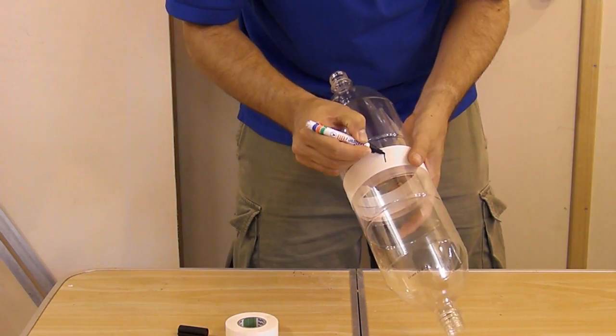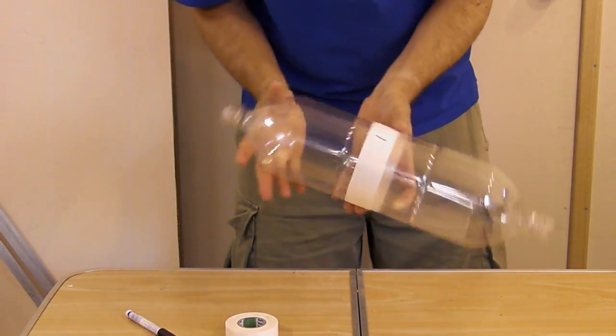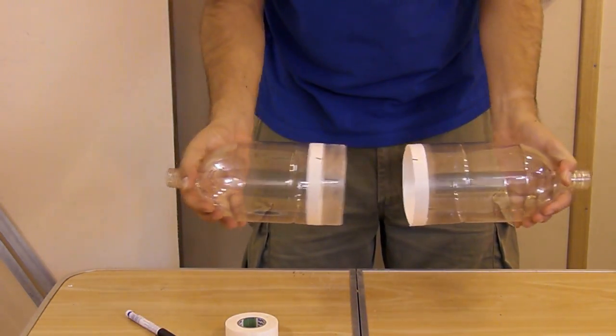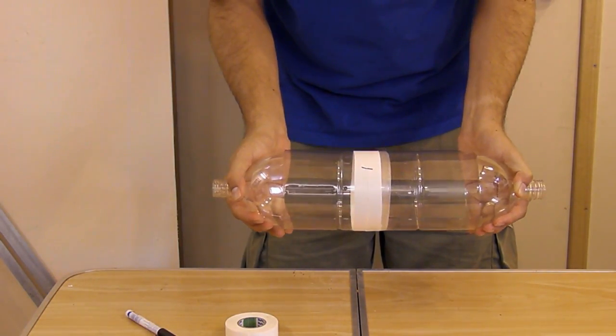Once you've done that, just mark it with a marker so you know where they'll align. And then the two bottles will come apart and go back exactly and rest up against the tape.